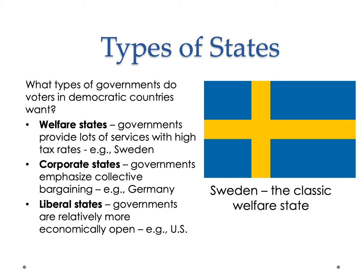Corporate states basically work with both labor unions and corporations to try to facilitate a desirable interaction between the two. Liberal states tend towards less regulation, lower taxes, and fewer interventions into the economy. So welfare states are governments that provide lots of services with higher tax rates—Sweden is a classic example. Corporate states emphasize collective bargaining, and a classic example of a corporate state is Germany.